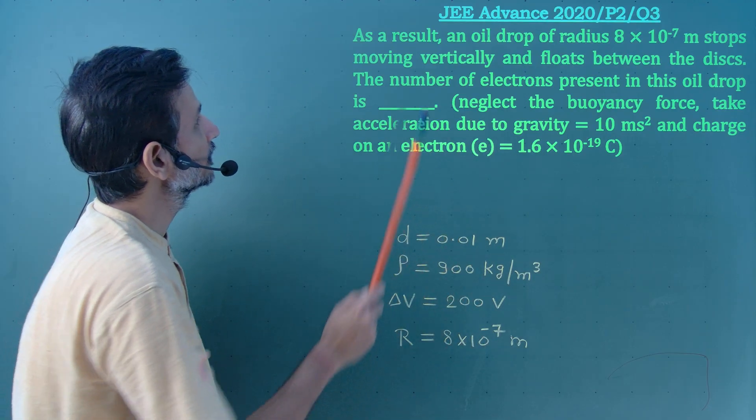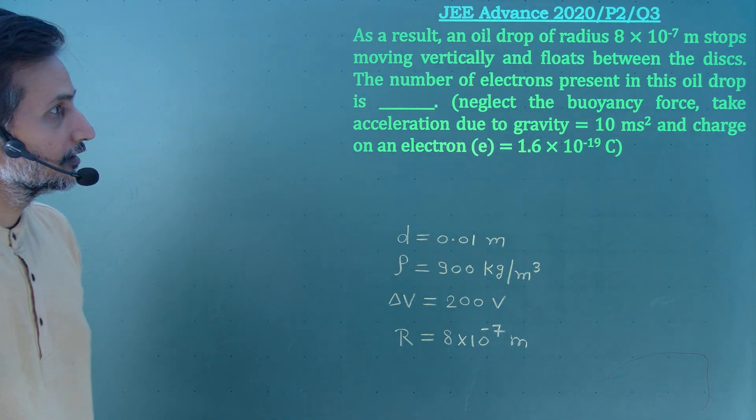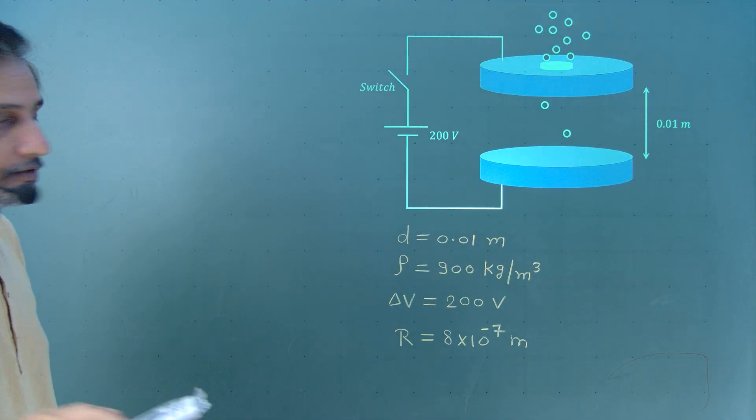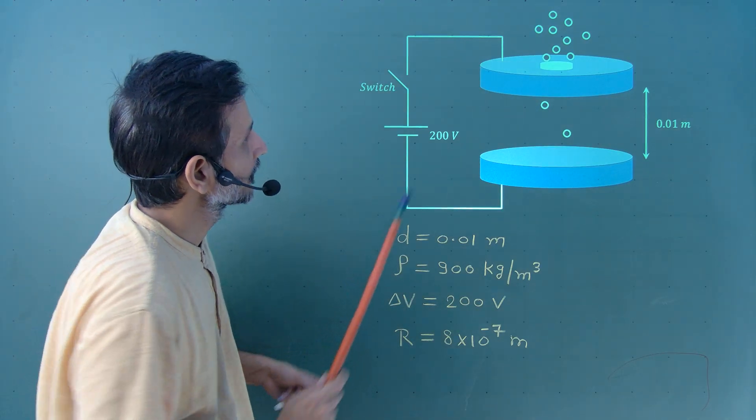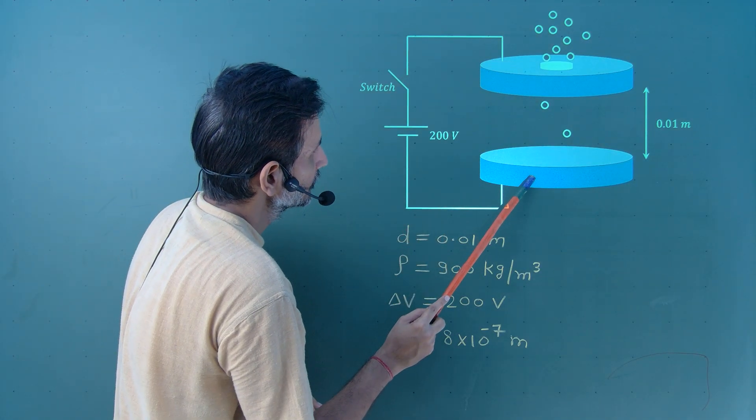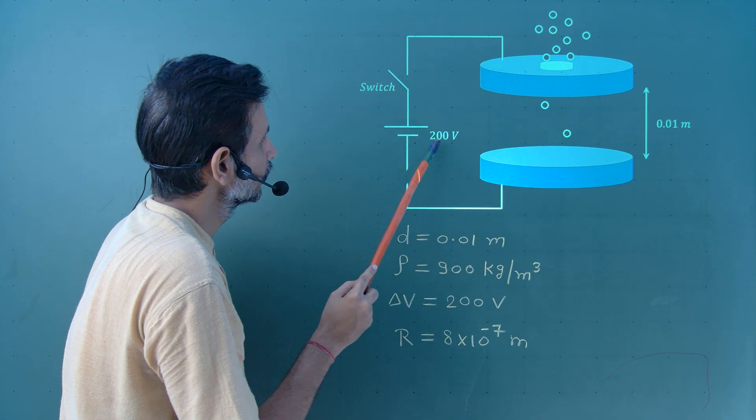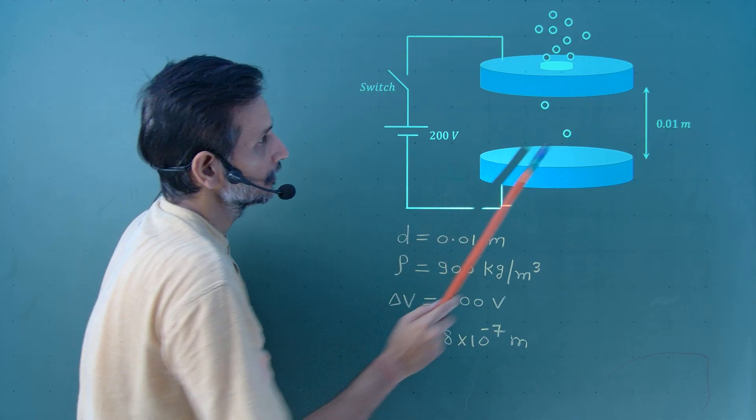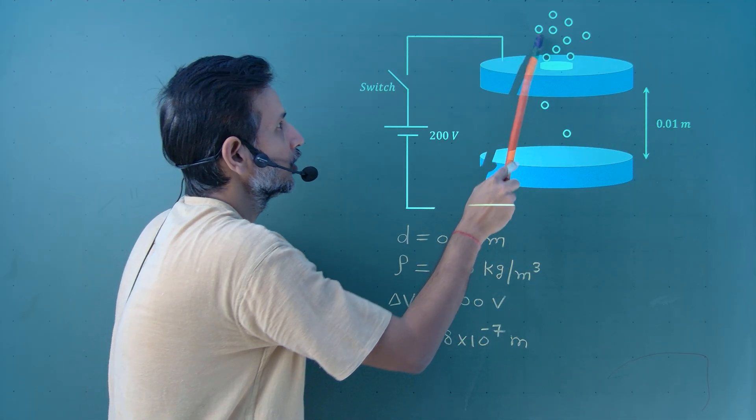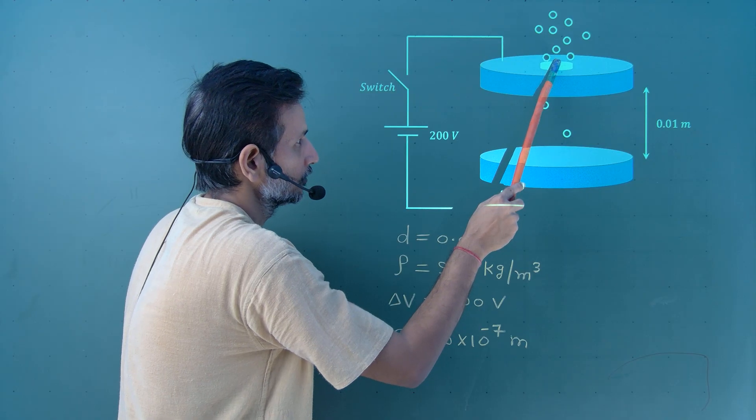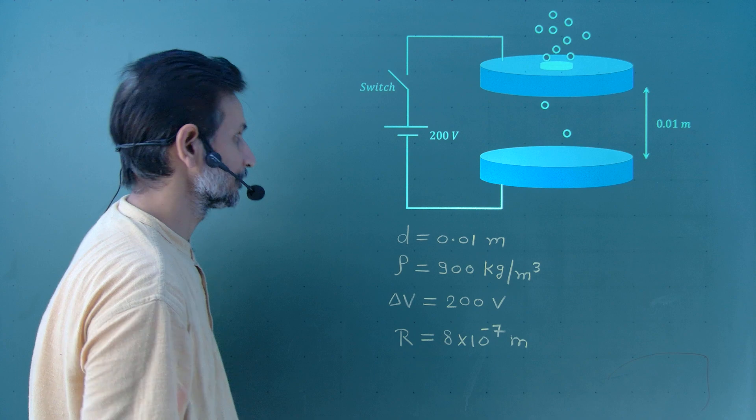We have to calculate the number of charge present in the oil drop. There is a figure. Now, we understand the full question. Upper disk, lower disk, both are connected to a battery of voltage 200 volts via a switch. The distance between these two metal disks is 0.01 meter. And some oil drops are dropped through this hole so that it can fall between the disks.